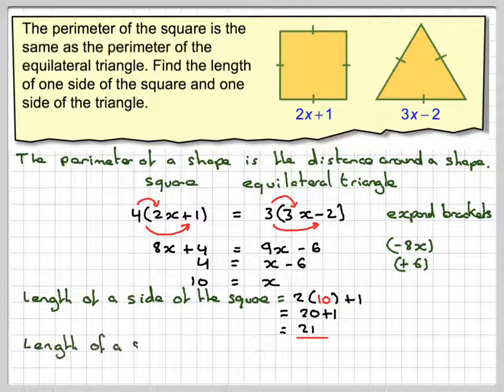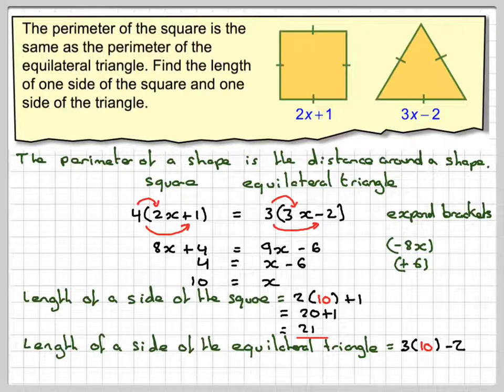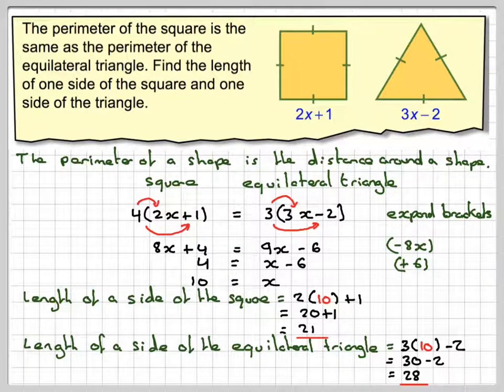The length of a side of an equilateral triangle, so that's 3x minus 2. So we're going to do 3 times x, which is 10, take away 2. 3 times 10 is 30, take away 2, which gives me a length of 28.